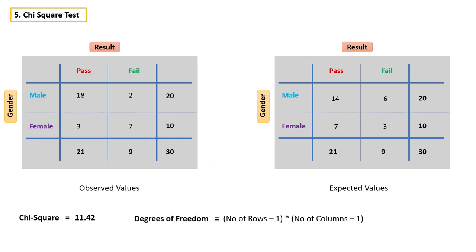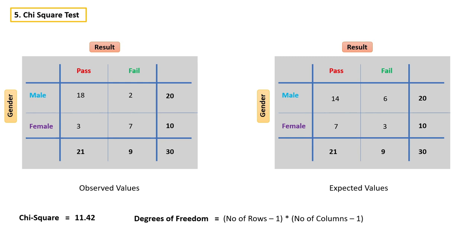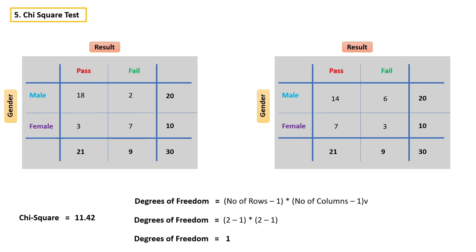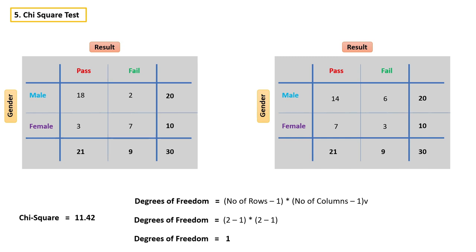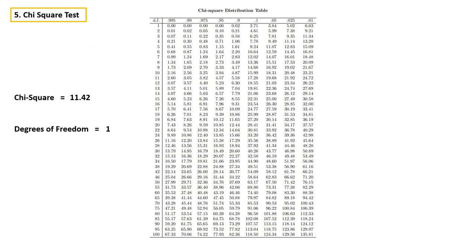After calculating the chi-square value, we have to calculate degrees of freedom. In chi-square, the degrees of freedom will be (number of rows minus 1) times (number of columns minus 1). In this case, the degrees of freedom will be 1. After calculating chi-square and degrees of freedom, we have to refer to the chi-square table. Here we get the critical value for 1 degree of freedom with a 95% confidence interval — in this case, the critical value is 3.84.